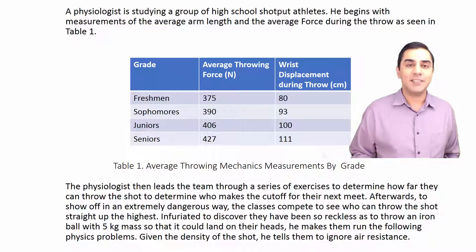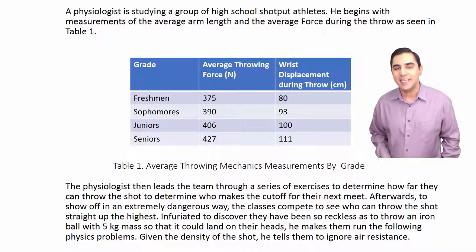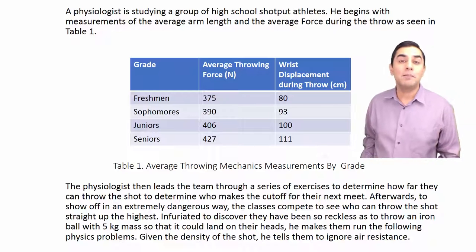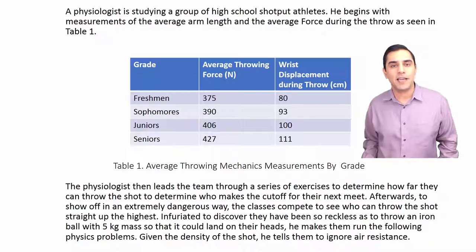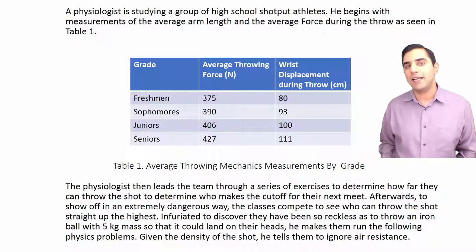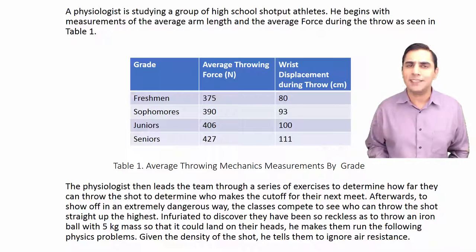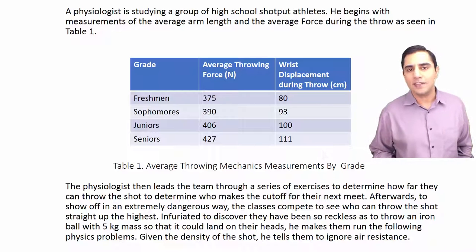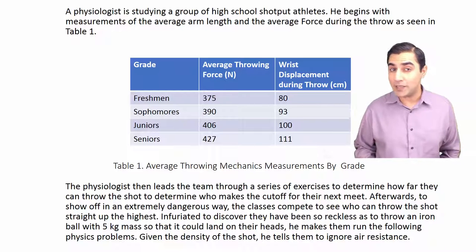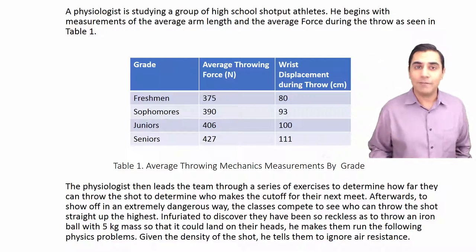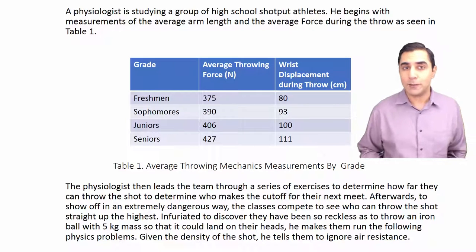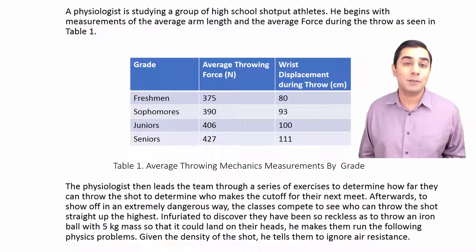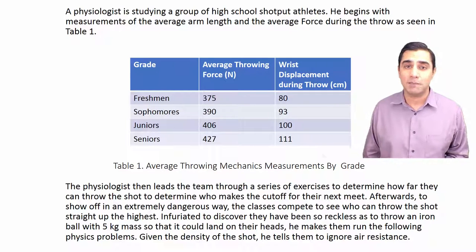Given the density of the shot, he tells them to ignore air resistance. This is a silly passage because I made it up, but the point is to learn how to read these passages and extract the relevant information. Some people like to highlight — I was never a huge highlighter unless it was a factoid like a number buried in the text, and for those I would absolutely highlight. Clearly this passage is going to have something to do with projectile motion because it's a shot put team.